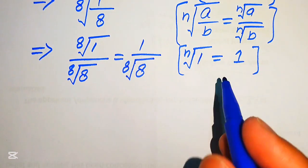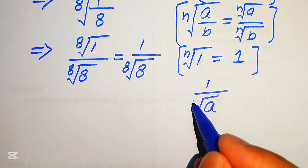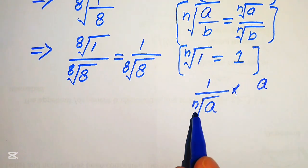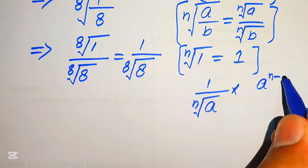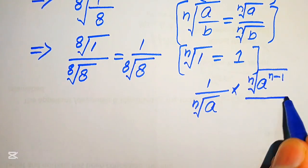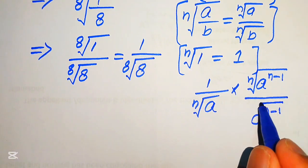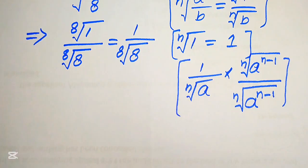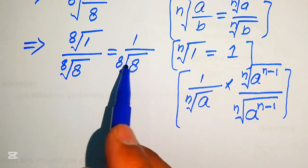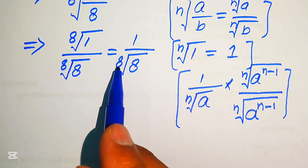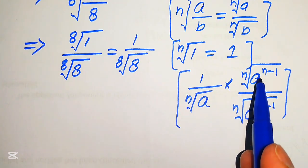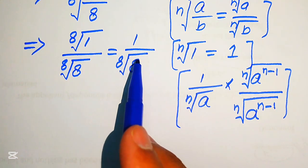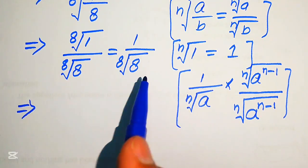We can apply another exponent law: if we have 1 over the nth root of a, we multiply and divide this term by the nth root of a to the power of n minus 1. In our question, the root or the exponent is 1 over 8, so n equals 8. We multiply and divide this expression by the 8th root of 8 to the power of 8 minus 1.